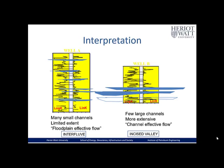The geological interpretation is as follows: in well A the high permeability zones are thin, so the channels were probably not very extensive. In well B the channels were thicker and therefore much more extensive — perhaps valley fills or incised valleys. In sequence stratigraphic terms, well A may be in more of an interfluve area, showing floodplain and channel effective flow combined, whereas well B shows flow rates more than 20 times higher, effectively from just the channels. This geological interpretation explains the very different well test responses seen in these two wells.